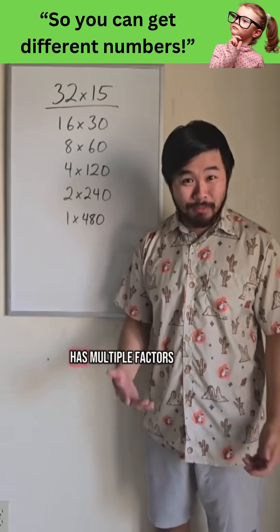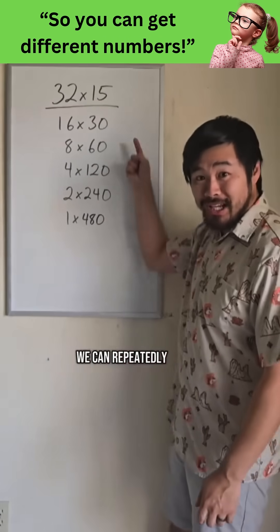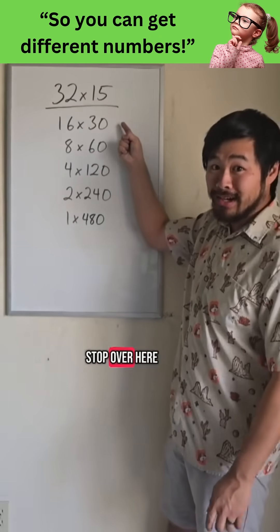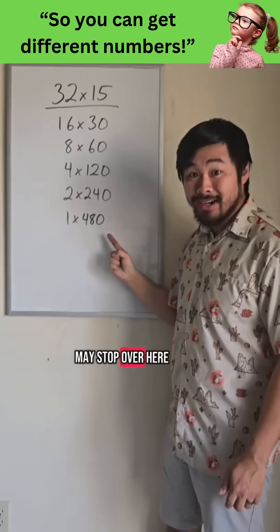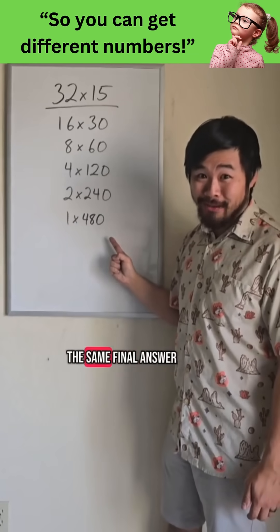And if one of the numbers has multiple factors of 2, we can repeatedly double in half. So someone may stop over here, while someone else may stop over here, and they would both arrive at the same final answer.